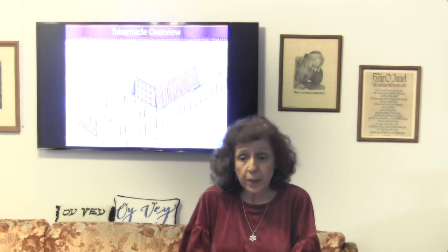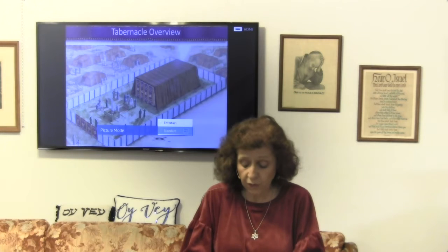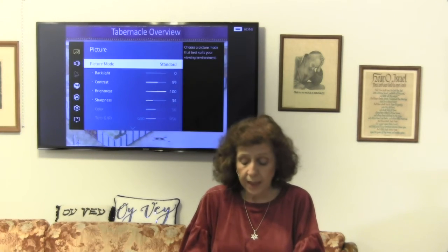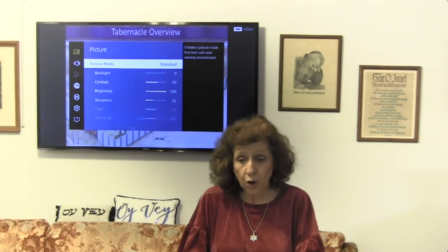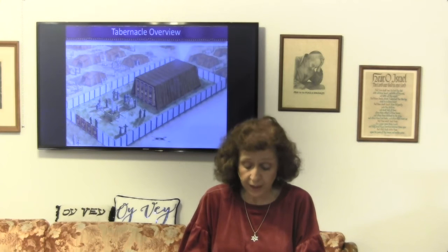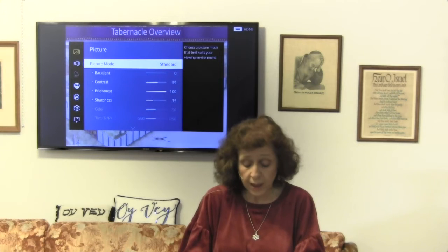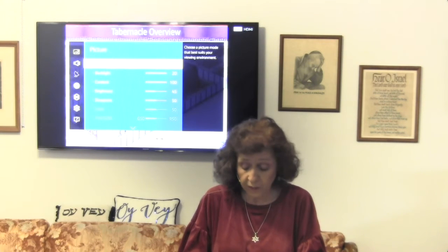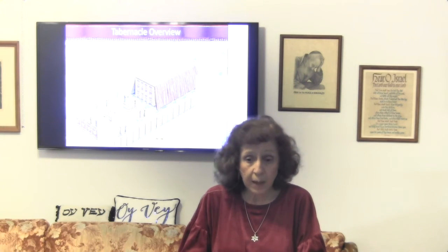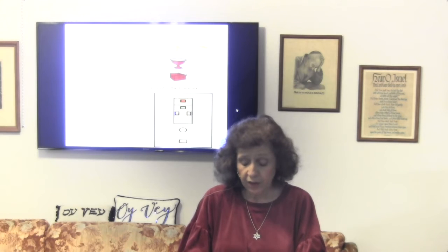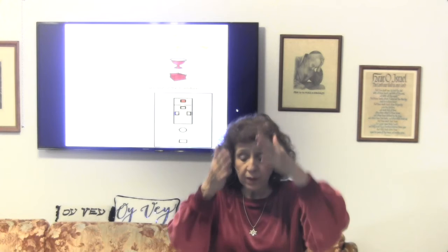Moshe built the tabernacle after the pattern he was shown. There is a heavenly tabernacle — it is the original — and the one on earth was patterned after everything Moshe saw and was given instruction to follow. We read of this in Shemot chapter 25, and Hebrews 9 also speaks to it being patterned after the heavenly. Remembering that the tabernacle is foreshadowing God's plan of redemption, the pattern was given to Moshe in the form of a cross. As we look at all the components of the tabernacle laid out, we see they are in the shape of a cross.